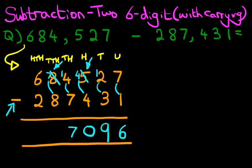Now we're on to the ten thousands: seven minus eight. The number seven is smaller than eight, so again we have to take one from the number to its left, which is six. Cross out six — six minus one is five — and the one we've taken we move to the right, so the ten thousands column now reads seventeen minus eight. Seventeen minus eight is nine. Lastly, the hundred thousands column: five minus two is three.